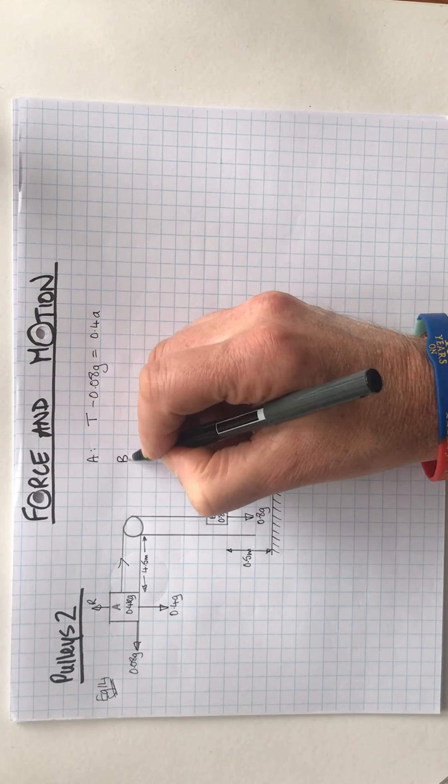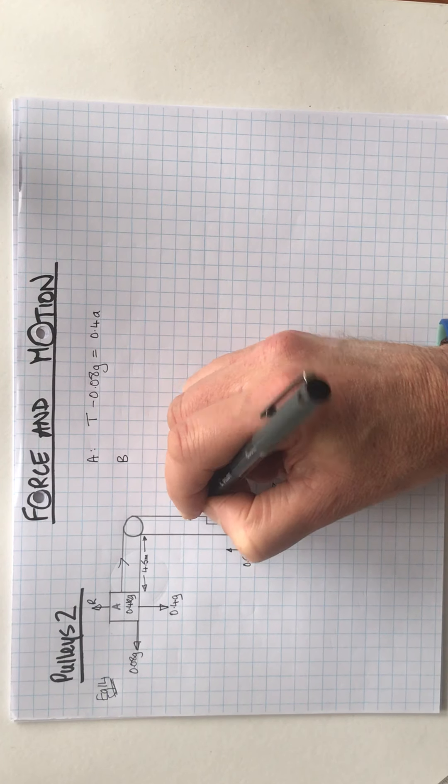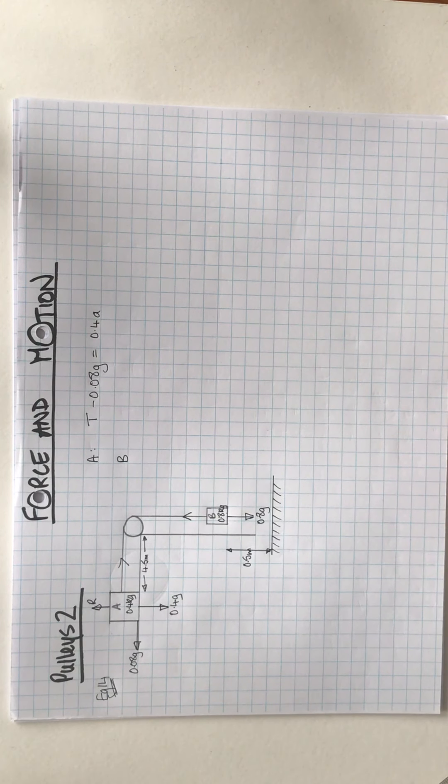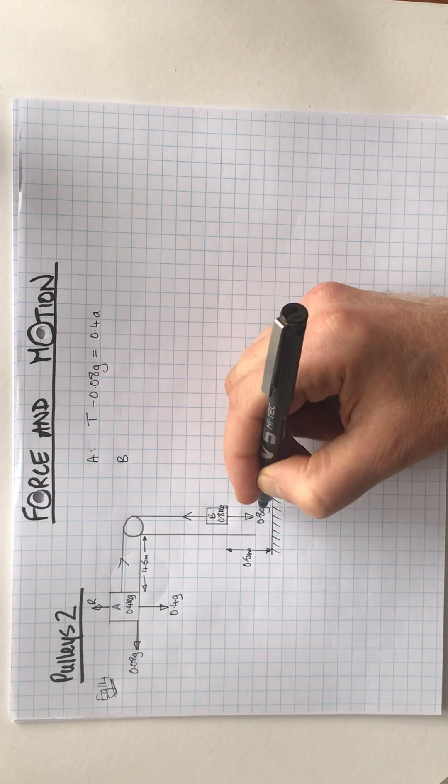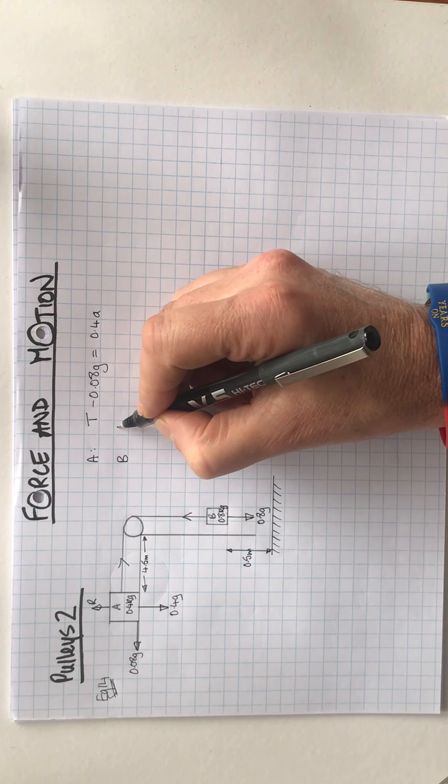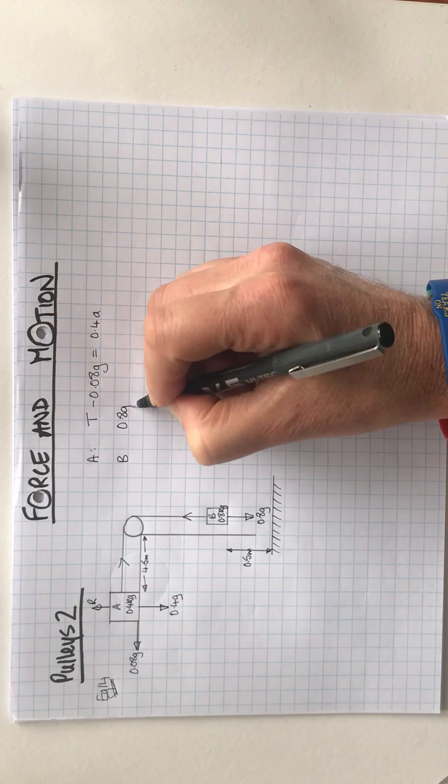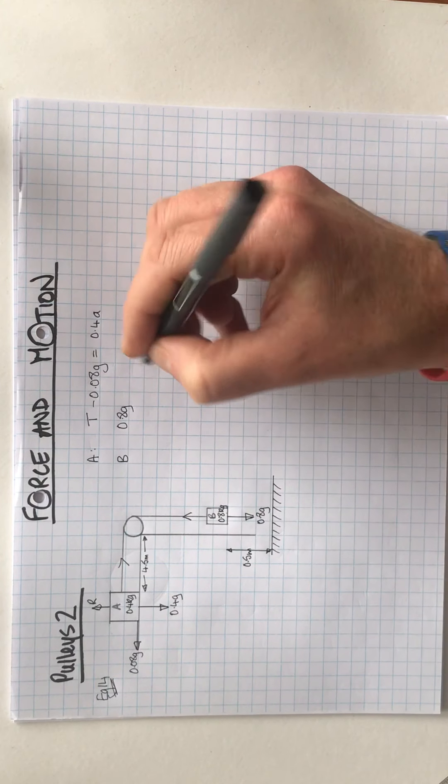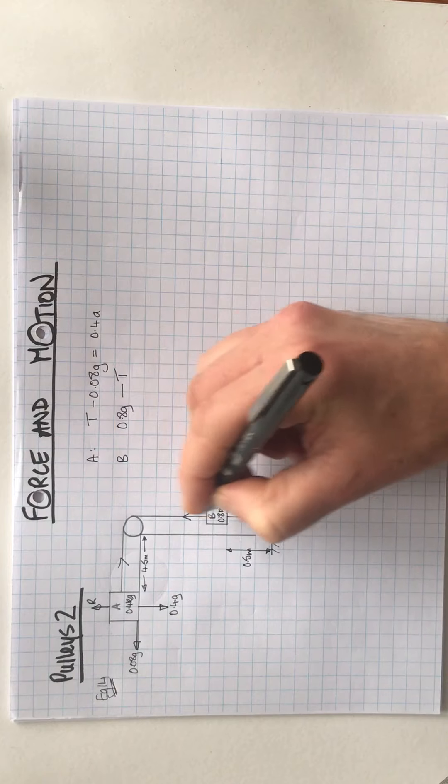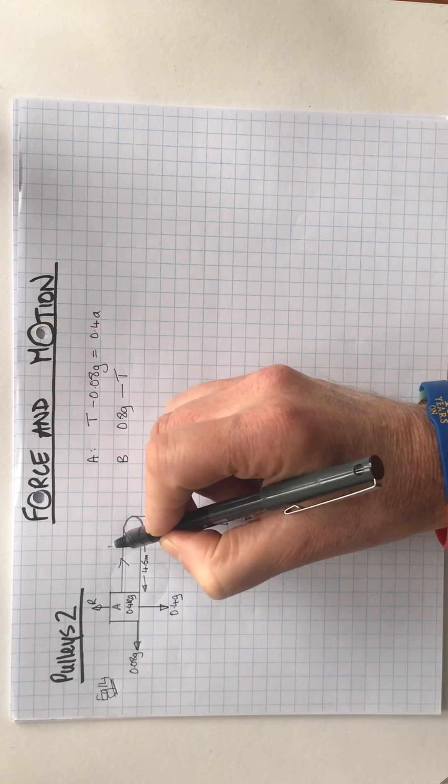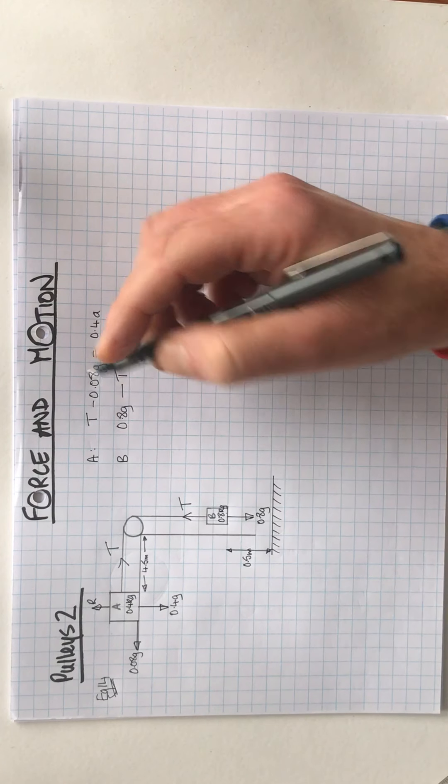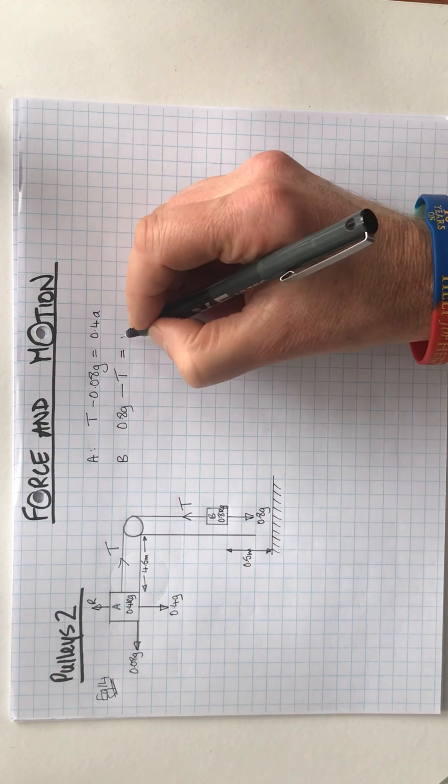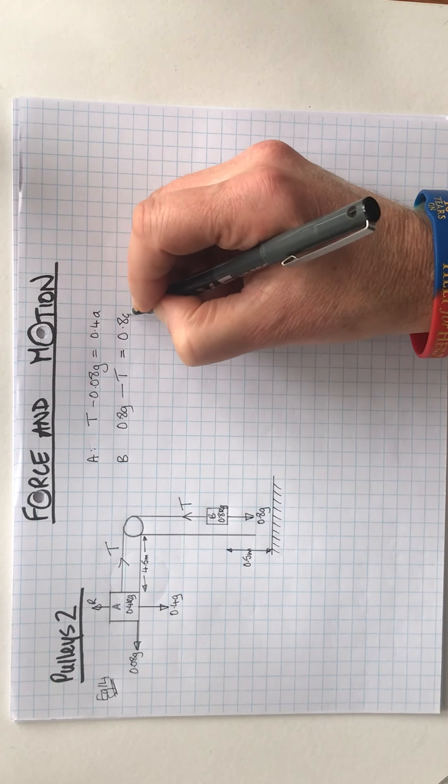Now let's consider for B. We've got a tension in the string which is slowing it down a little bit. It's moving downwards. So let's consider 0.8g is the positive. 0.8g is the force pulling it downwards, take away the tension which is pulling it back up a little bit, or at least slowing it down. And that's going to equal 0.8A.